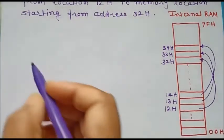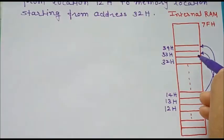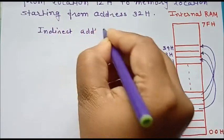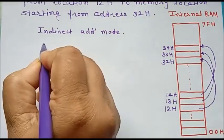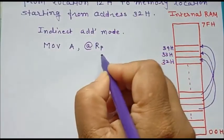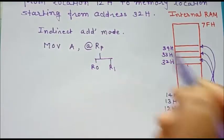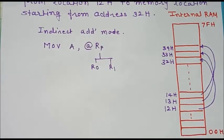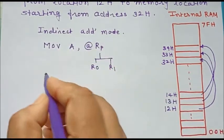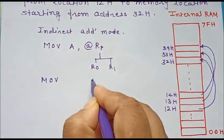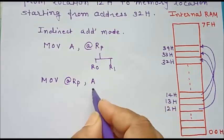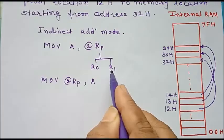To read data from a memory location and write it to another memory location, we will use indirect addressing mode. To read data from a memory location, we use the instruction MOV A, @Rp, where Rp indicates register R0 or R1. It reads data from the memory location whose address is stored in that register and stores it in the accumulator. To write data from the accumulator to a memory location, we use MOV @R1, A — the accumulator data is stored at the memory location whose address is in R0 or R1.